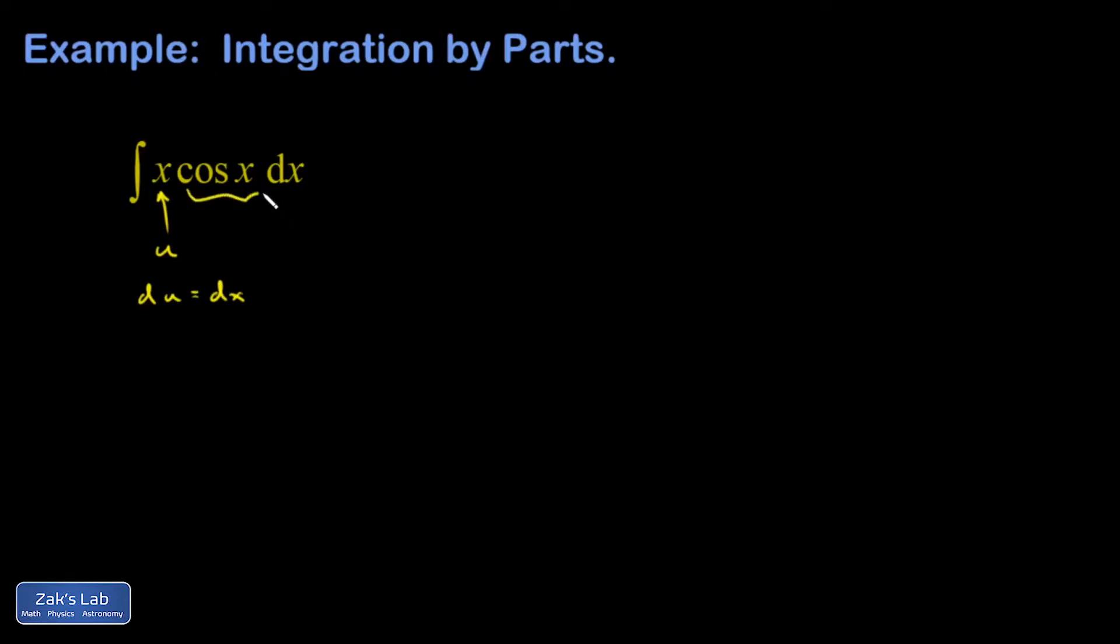The remaining chunk is dv, and so I just guessed the antiderivative of this thing. Just to explain real quick, if dv is cosine x dx, that means dv over dx.